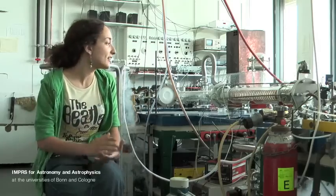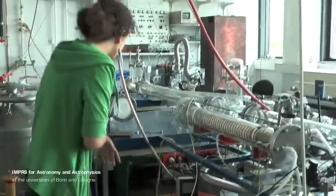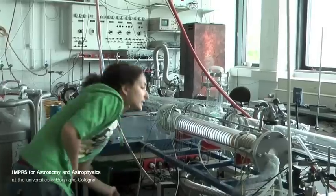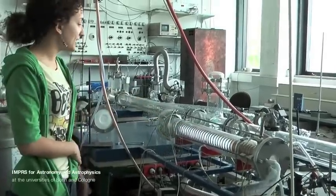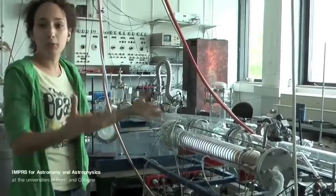The ions are produced in a discharge which I will turn on now. So this is a glow discharge and I use it for producing the ions.